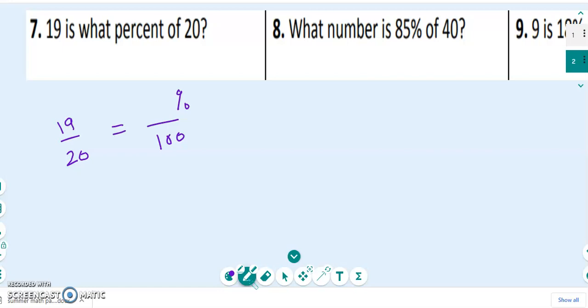There's two ways to do this. One way is that you can cross multiply and divide. So you can basically take 19 and divide it by 20. A lot of students find that that is difficult to do that long division. So another way to do this is by saying, what do I multiply 20 by to get 100?